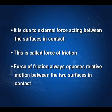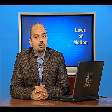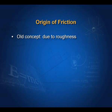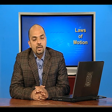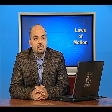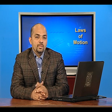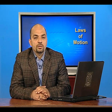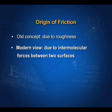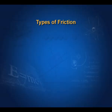This external force is called the force of friction. Force of friction always opposes relative motion between the two surfaces in contact. According to the old concept, friction is due to the roughness between the two surfaces. If surfaces are rough, friction is high; if smooth, friction should be small. But practically, if surfaces are extra smooth, the force of friction increases. In the modern view, force of friction is due to intermolecular forces between the two surfaces.